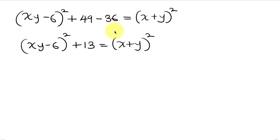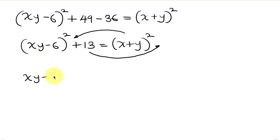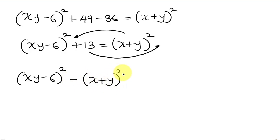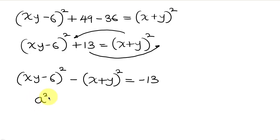Our next step will be to move (x + y)² to the left and move 13 to the right. So we have (xy - 6)² minus (x + y)² equals negative 13. Notice that we have a difference of two squares. An expression like a² - b² can be expressed as (a - b)(a + b).